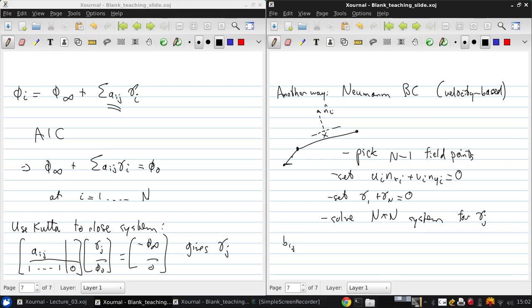So now we're going to have a different aerodynamic influence coefficient matrix, which we can call b_ij. And this is multiplied by gamma_j. And that gives us negative v_infinity dot n_i.